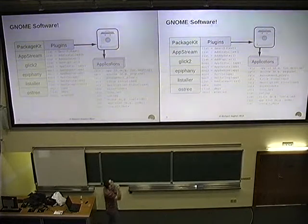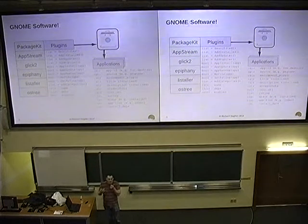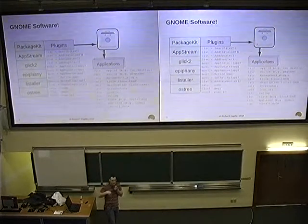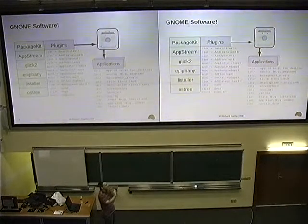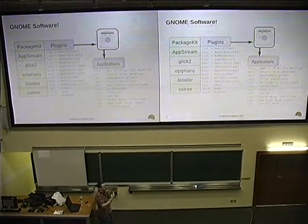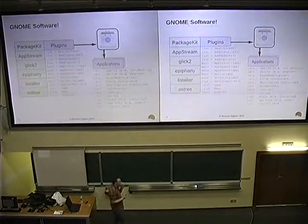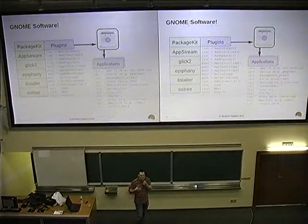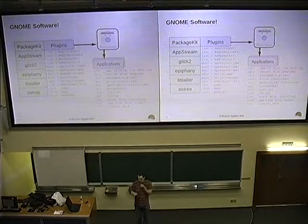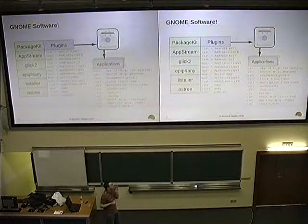To do this, we created a plugin structure where the UI asks all the plugins: can you return all the applications you have that are installed? The package plugin returns all installed packages that happen to be applications. Then we go to the next plugin — say Epiphany — and ask: what web applications have you got installed? It adds to the list, done in threads, and returns to the UI super quick. Similarly, once we've got that list of applications, we can refine it — maybe get ratings, screenshots, or other details that are more expensive to fetch.